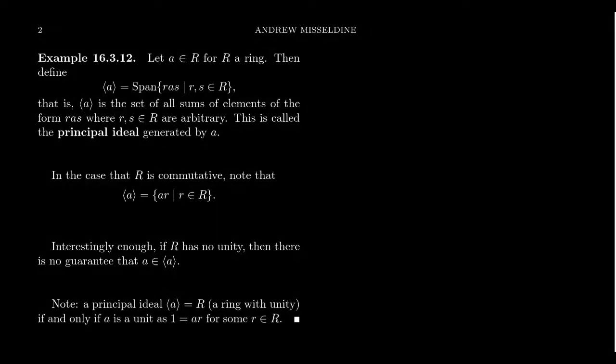In the previous video we defined the notion of an ideal for a ring, and we mentioned how an ideal is basically the ring-theory version of a normal subgroup — they're kernels of ring homomorphisms and you use them to make quotient rings. I want to add to this theory of ideals we've talked about previously.